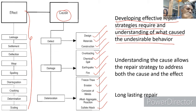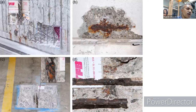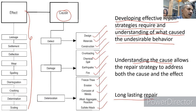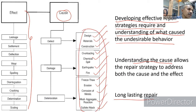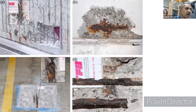Once you understand the causes, you can design a repair strategy that handles both the effect and the cause, ensuring a long-lasting repair. In the Odisha hospital buildings project, the most important cause we found was corrosion — this was the major issue creating problems in Odisha.